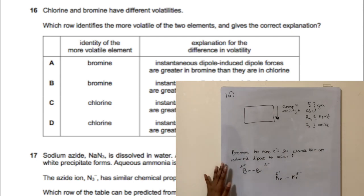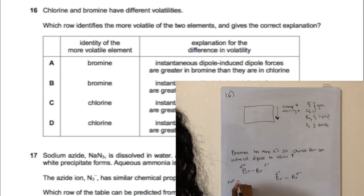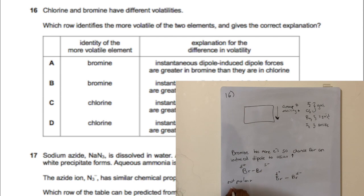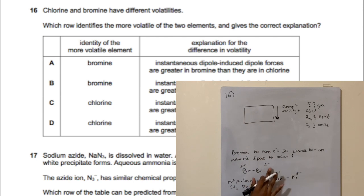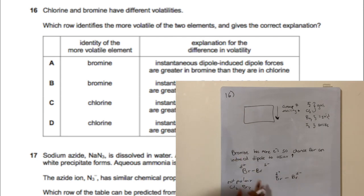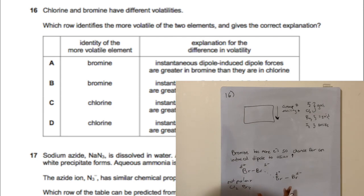To understand why bromine is less volatile than chlorine: bromine has more electrons, so the chance of an induced dipole increases. Even though Cl₂ and Br₂ are non-polar diatomic molecules with no electronegativity difference, electrons do move around, creating temporary dipoles.